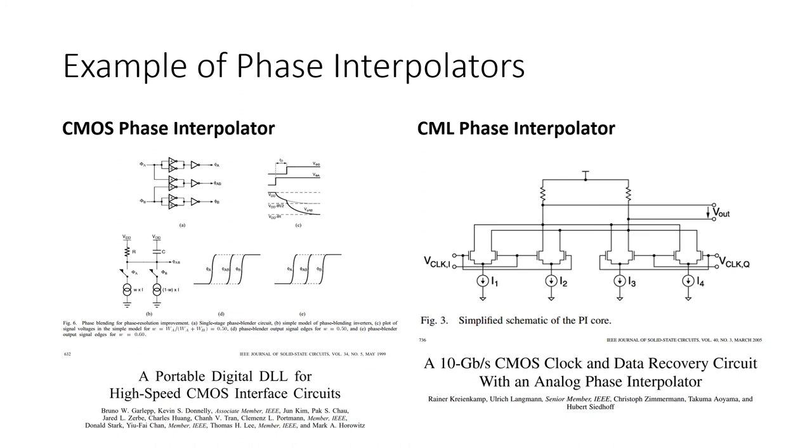Briefly, here are a couple examples of phase interpolator circuits in CMOS. Shown on the left is the simple CMOS phase interpolator made out of inverters. So imagine you've got two clocks with different phases but the same frequency coming in at PHI A and PHI B here.